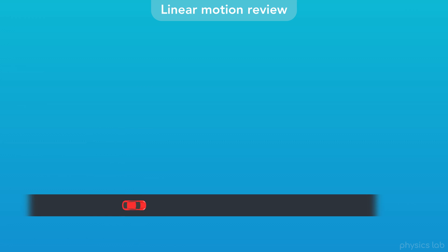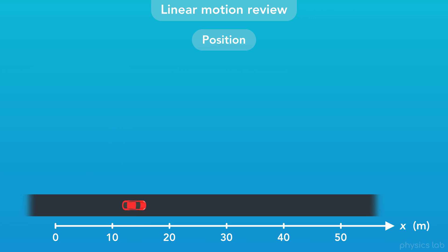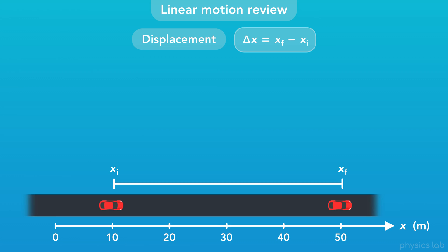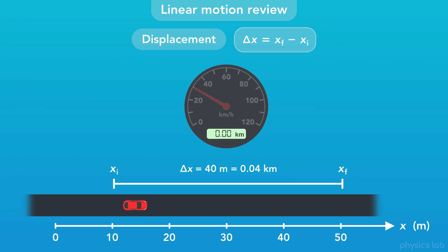This car is driving along a straight road. With linear motion, we describe the position of the car along one axis relative to a zero point. Here the car's position is 10 meters, and here the car's position is 50 meters. Displacement is the change in position, or the final position minus the initial position. This car's displacement would be 40 meters, or 0.04 kilometers. And the odometer in the car tells us how far the car drove.